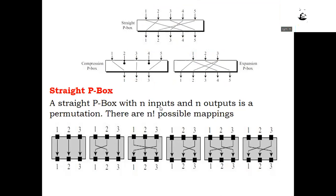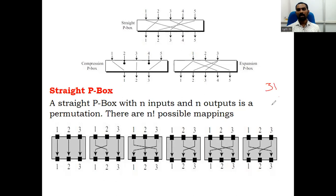A straight P-box with N inputs and N outputs is a permutation. There are N factorial possible mappings. For example, if I have three bits, I can arrange them in three factorial — that is six — ways. If you consider the P-box with three bits input, I can rearrange them in three factorial ways.